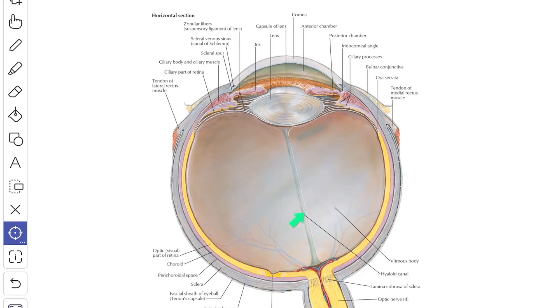A narrow hyaloid canal extends forward through the body from the optic disc to the posterior surface of the lens. The canal is occupied in fetal life by the hyaloid artery, a continuation of the central artery of the retina which normally disappears about six weeks before birth.